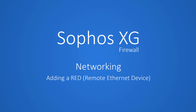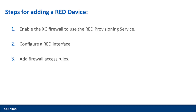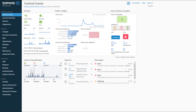In this video, we will be taking a look at how to add RED devices to an XG firewall. Adding a RED device to an XG firewall is pretty simple. It's three basic steps: enabling the RED provisioning service on the firewall, creating a RED interface for each RED device I want to add, then finishing up with creating the necessary firewall access rules so the users in the remote office can have access to the network resources in my local network.